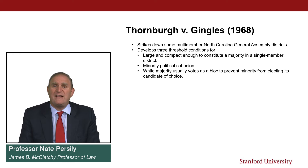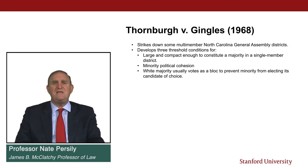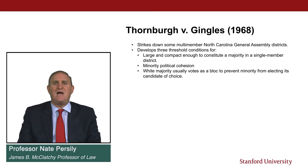The three Jingles threshold conditions are: first, the minority group must be large and compact enough to constitute a majority in a single-member district; second, the minority must be politically cohesive; and third, the white majority must usually vote as a block to prevent the minority from electing its candidate of choice. Let's go through each prong and see how it has been operationalized both in Jingles and by subsequent cases.